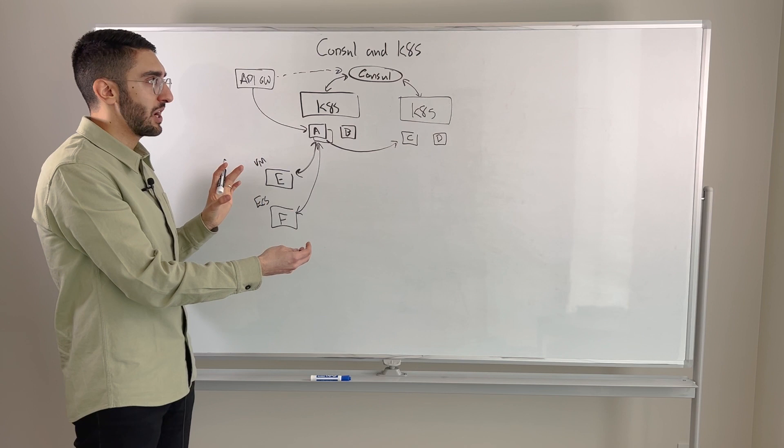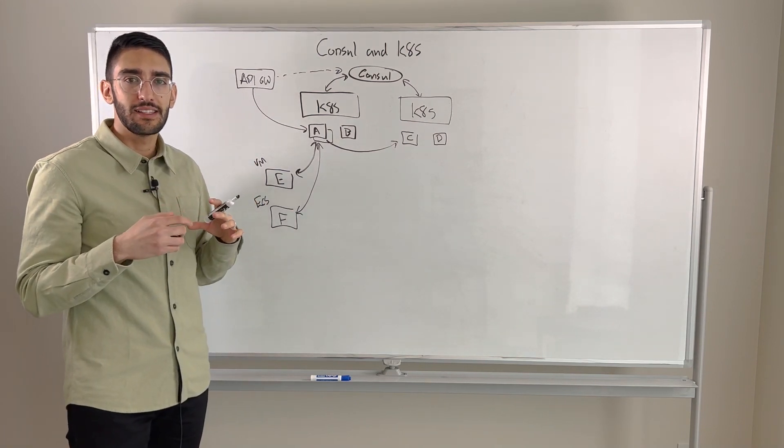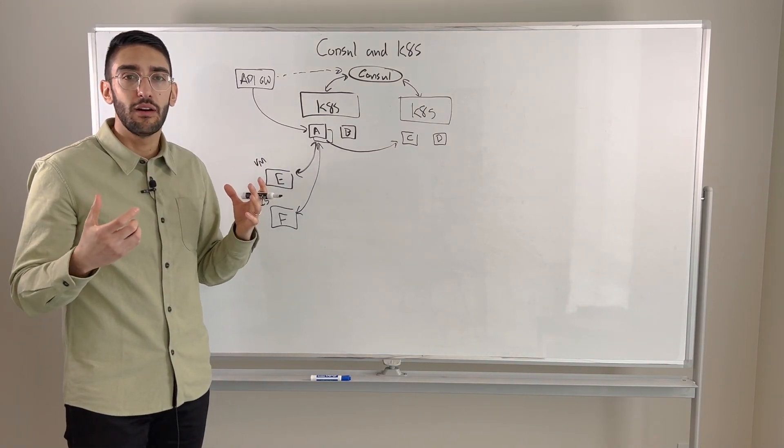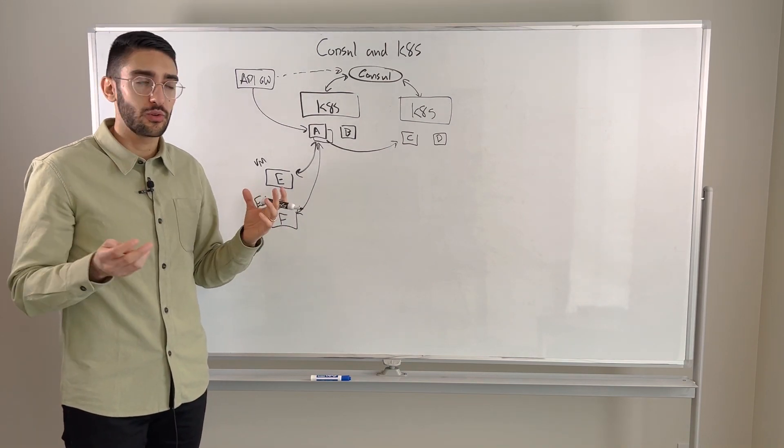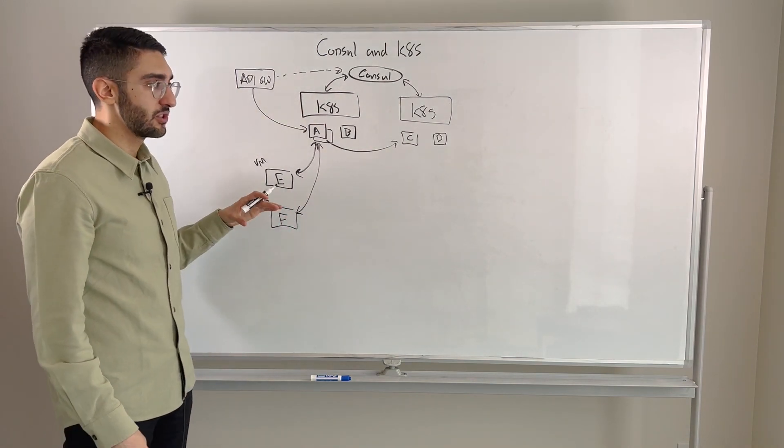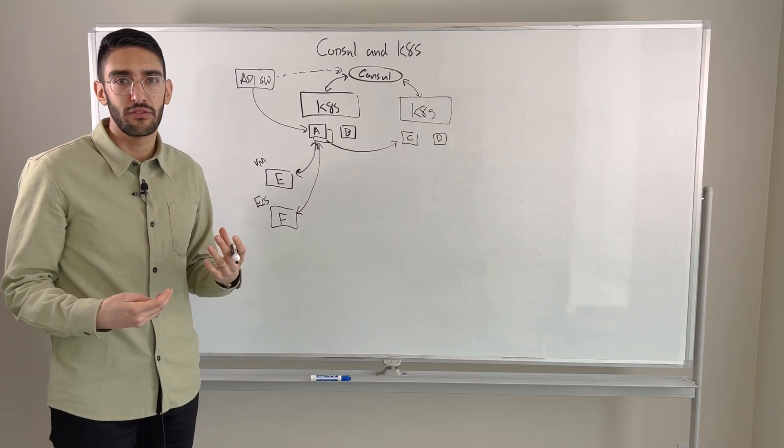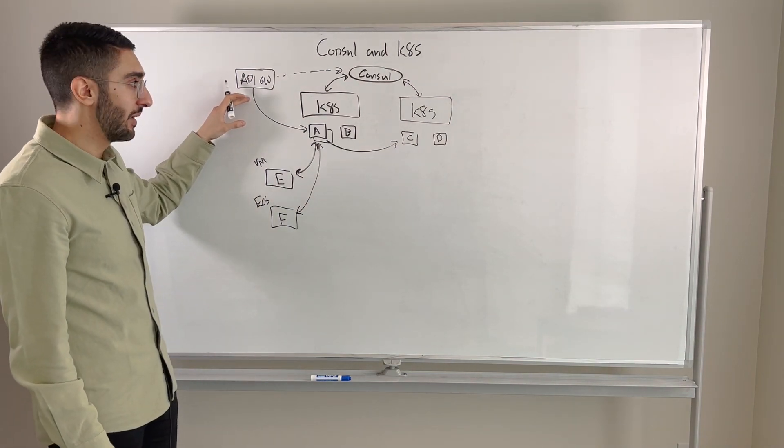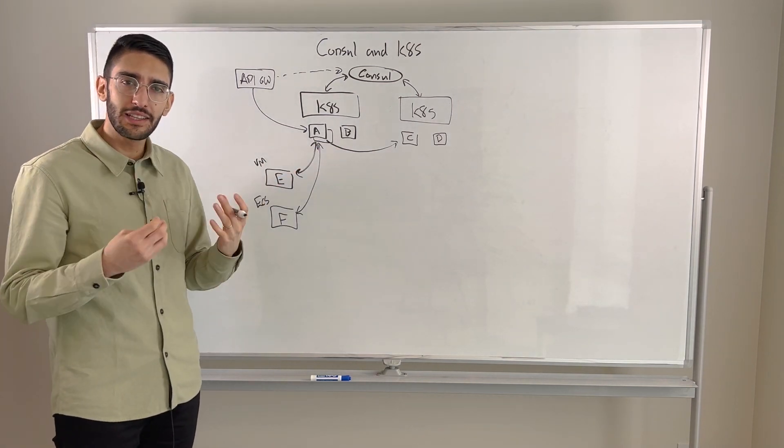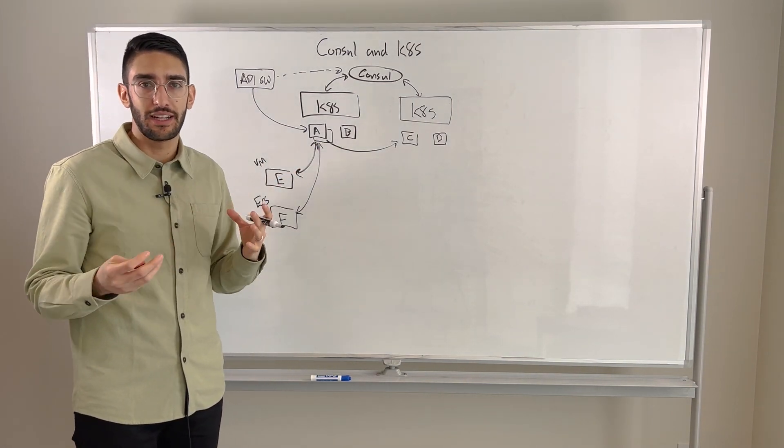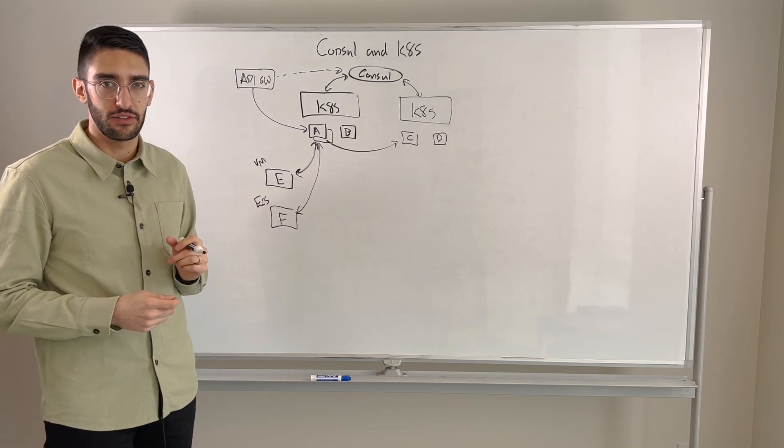So in this first level challenge, it's really around how do we create a single universal directory of where all of our different services are running. That's sort of a service registry that allows all of our applications to query it to do service discovery. And then we can integrate with things like API gateways to enable that sort of discovery challenge. So that's layer one, is really just solving the connectivity challenge across all of these different systems.